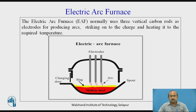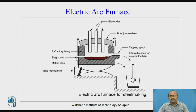The electric arc furnace normally uses three vertical carbon rods as electrodes for producing arcs, striking onto the charge and heating it to the required temperature. The diagram shown on the screen is self-explanatory, where the three electrodes are present and an arc is shown between the electrode tip and the slag. The charging door, spout, and cover are also shown.